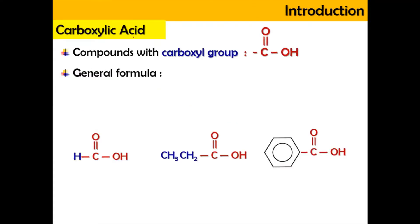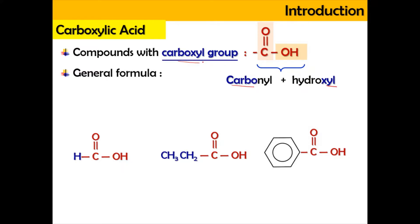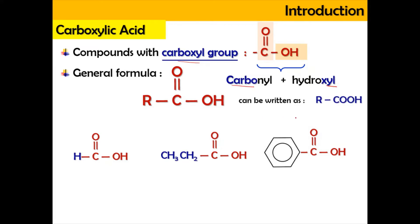Carboxylic acid is basically a compound with the carboxyl group, where the carboxyl group comes from the name of the carbonyl on one side and also hydroxyl on the other side. The combination of carbo and hydroxyl will produce a carboxyl group. They will have a general formula of RCOOH, which can also be written as RCOOH, where the COOH group is present and R can be hydrogen, an alkyl group, or an aryl group.